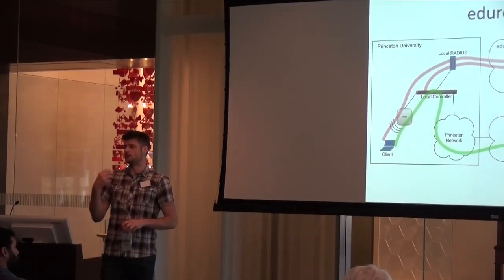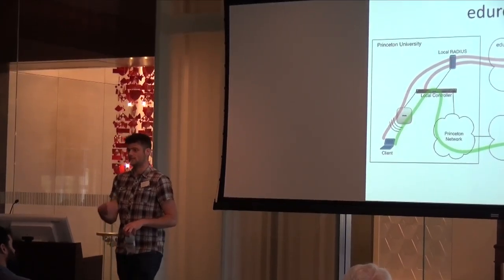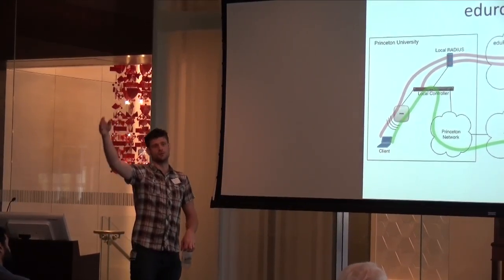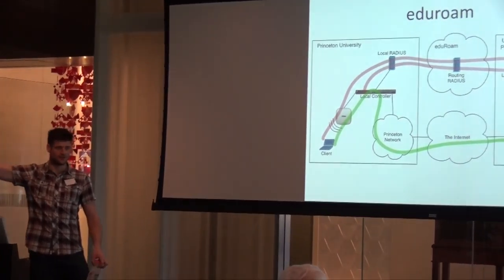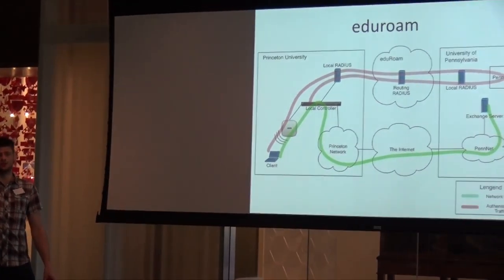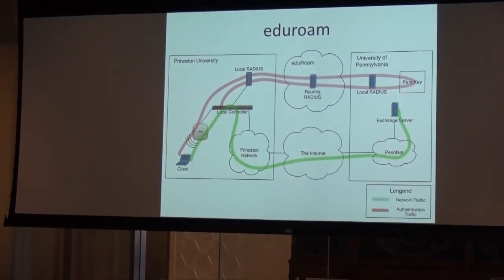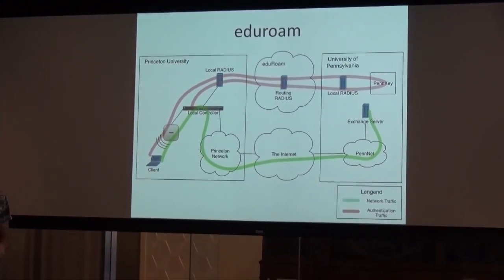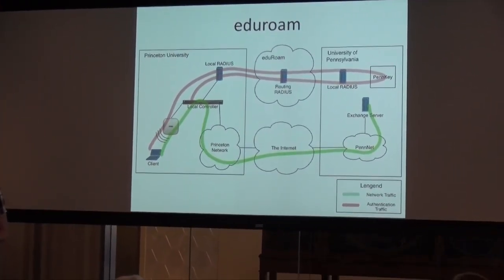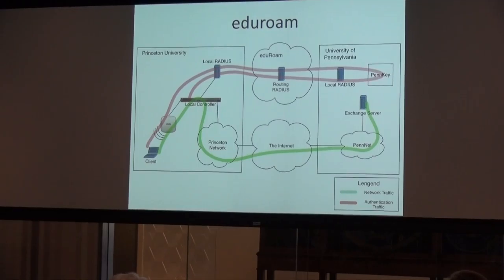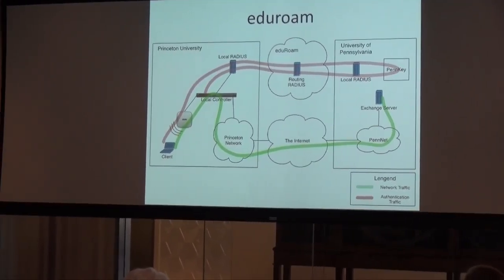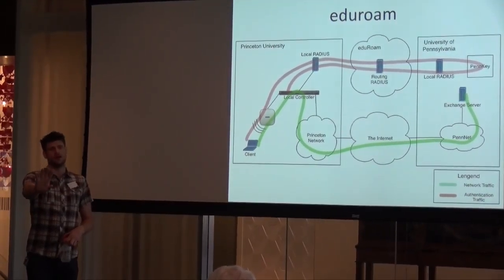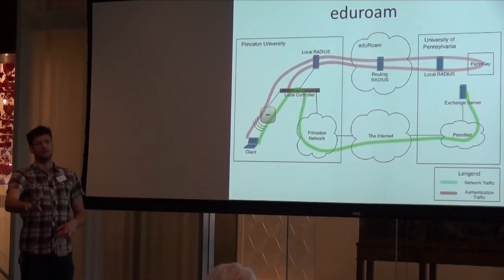The idea is that you can use your PennKey and password to log on to the internet at Drexel, Cornell, Columbia, Haverford, MIT, the University of London, and so forth. You configure your device here on campus, connect to the Eduroam SSID here, and then you can travel anywhere else that has the Eduroam SSID.